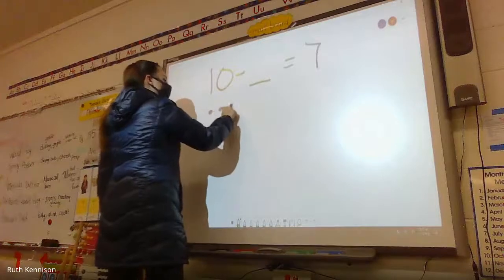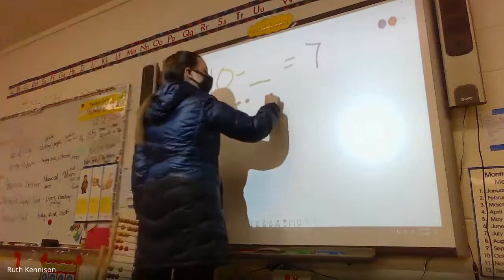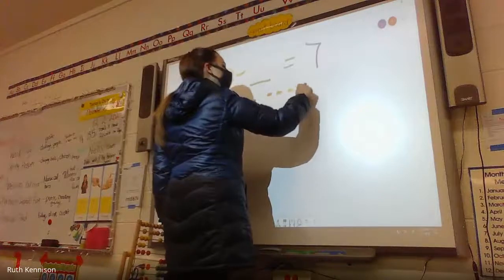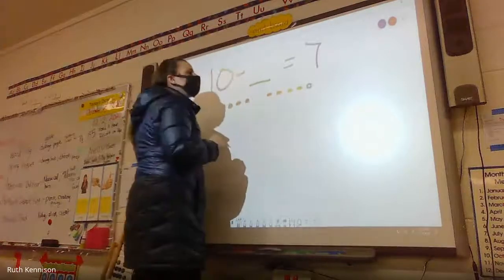I feel like when I clear it, I shouldn't have to do with the eraser. Ten minus what equals seven? You could also do something like this. One, two, three, four, five, six, seven, eight, nine, ten. Now I want seven.